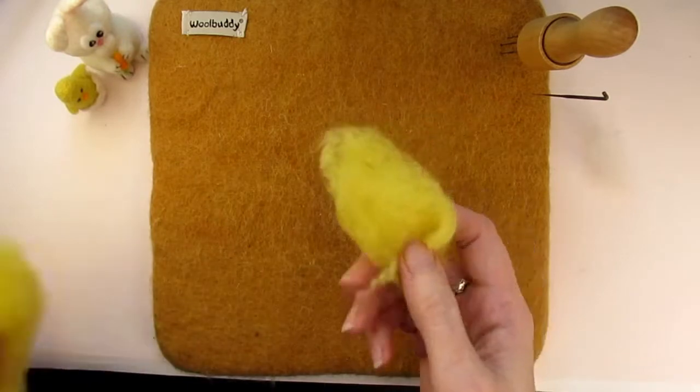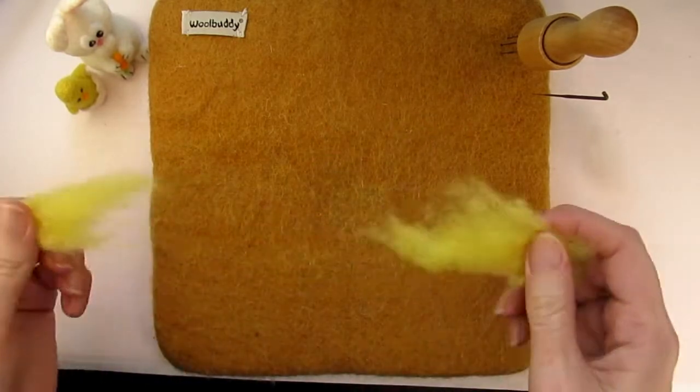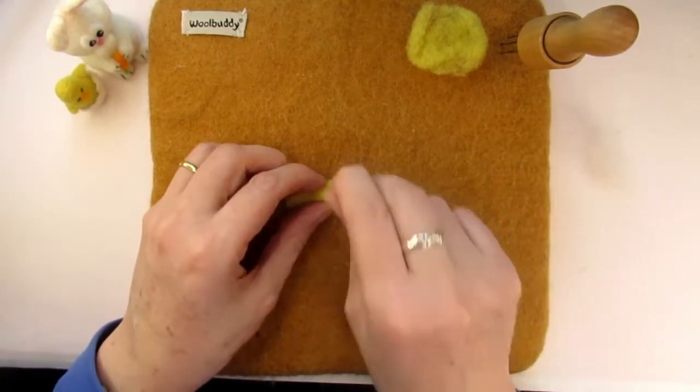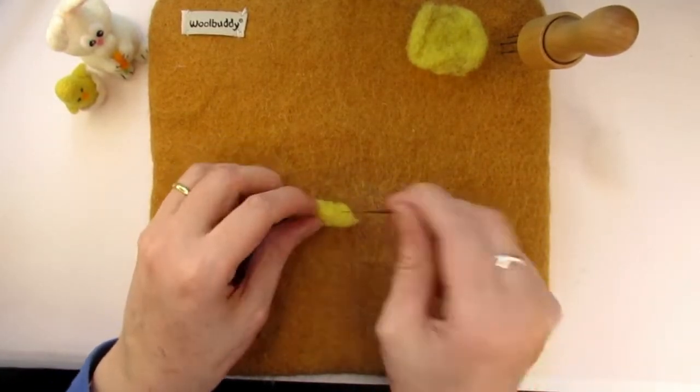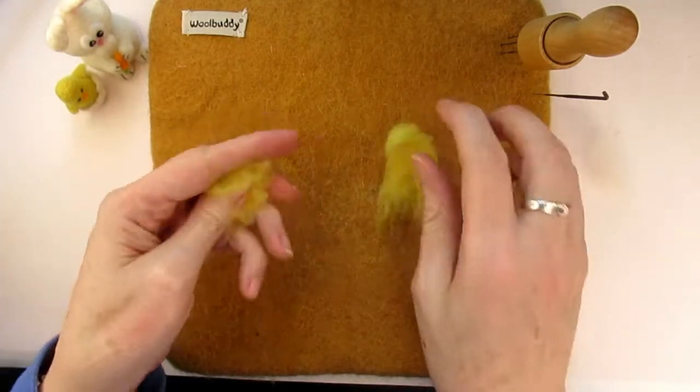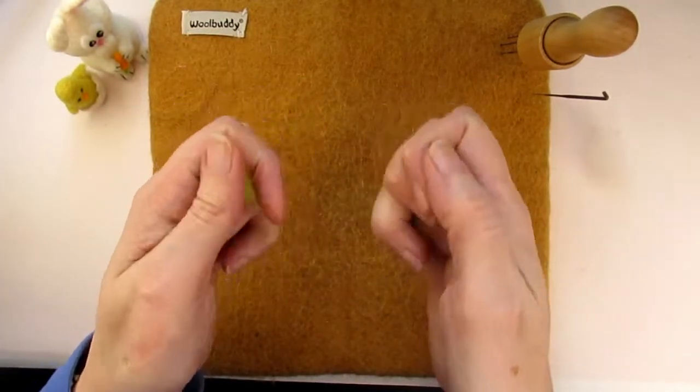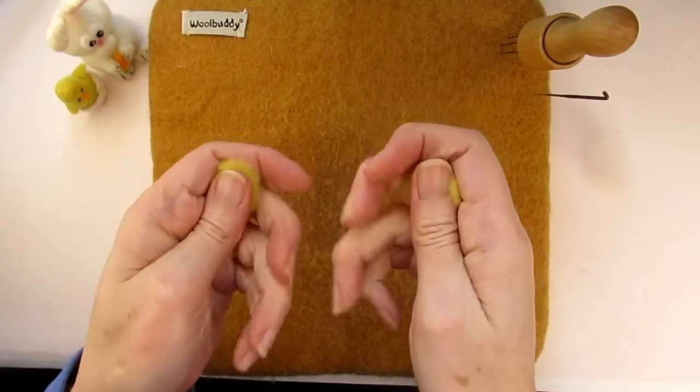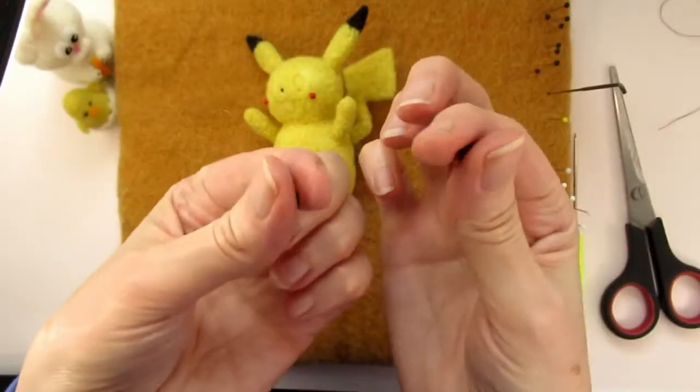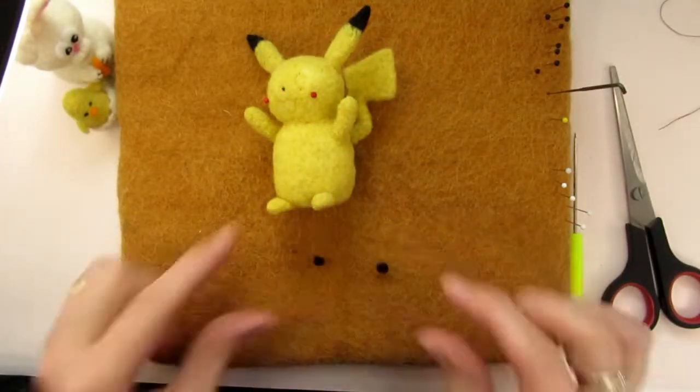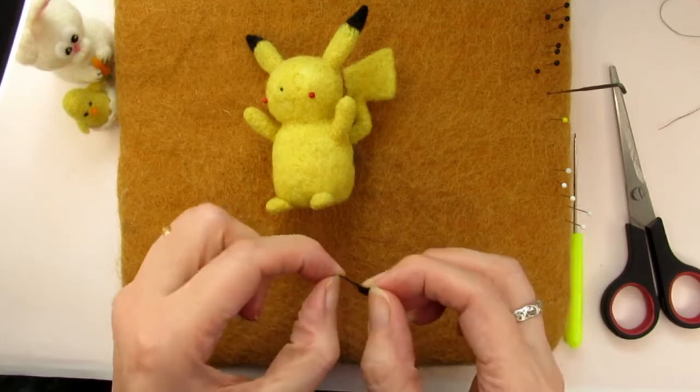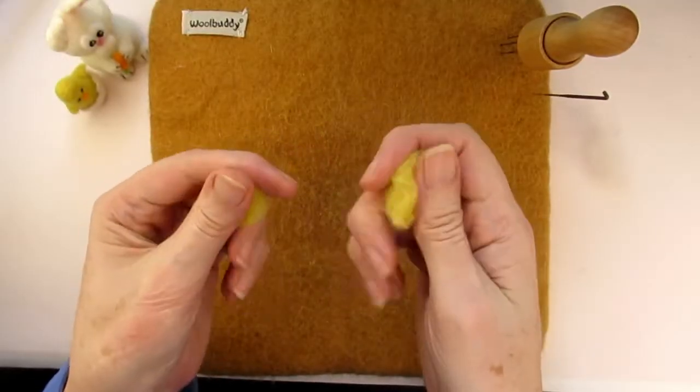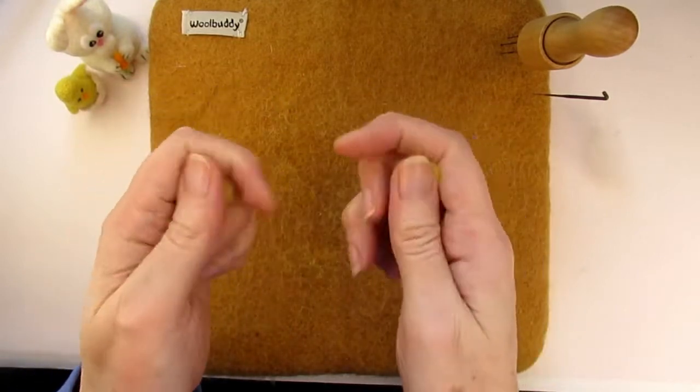The secret to getting this right is using all of your senses, not just sight. Let's say you're trying to make two arms the same size and shape. The first thing to do is to prepare the wool for both arms before you start stabbing anything. To do this pick up the wool and use your sense of touch to feel how dense they are. Screw them up into a ball and hold them in your hands. Concentrate on which feels bigger or more dense than the other. This is especially useful when trying to get two eyes or pupils the same size. You'll be surprised how sensitive your fingers are.